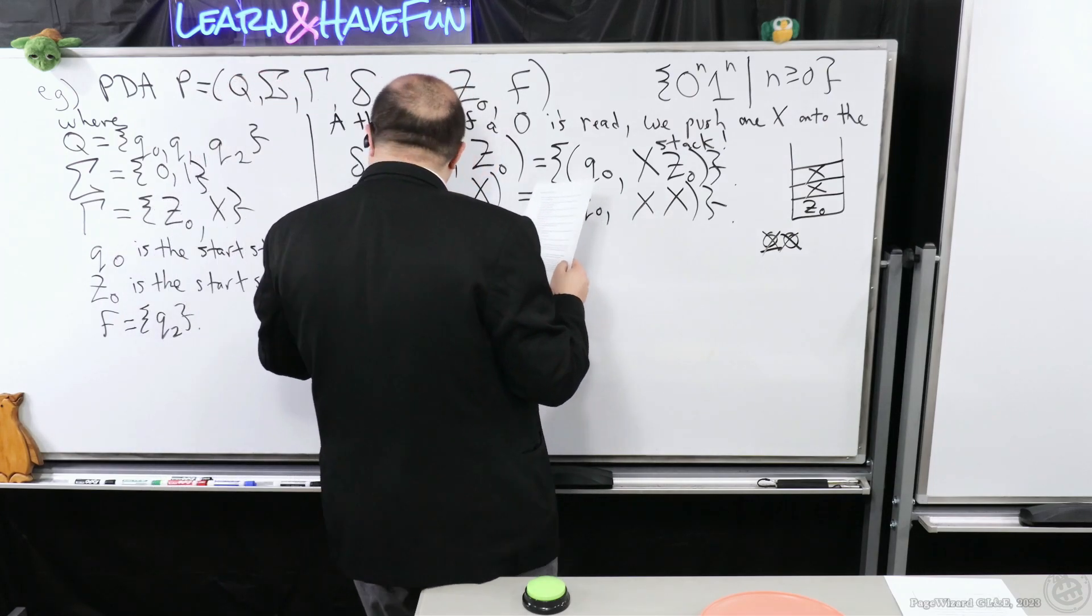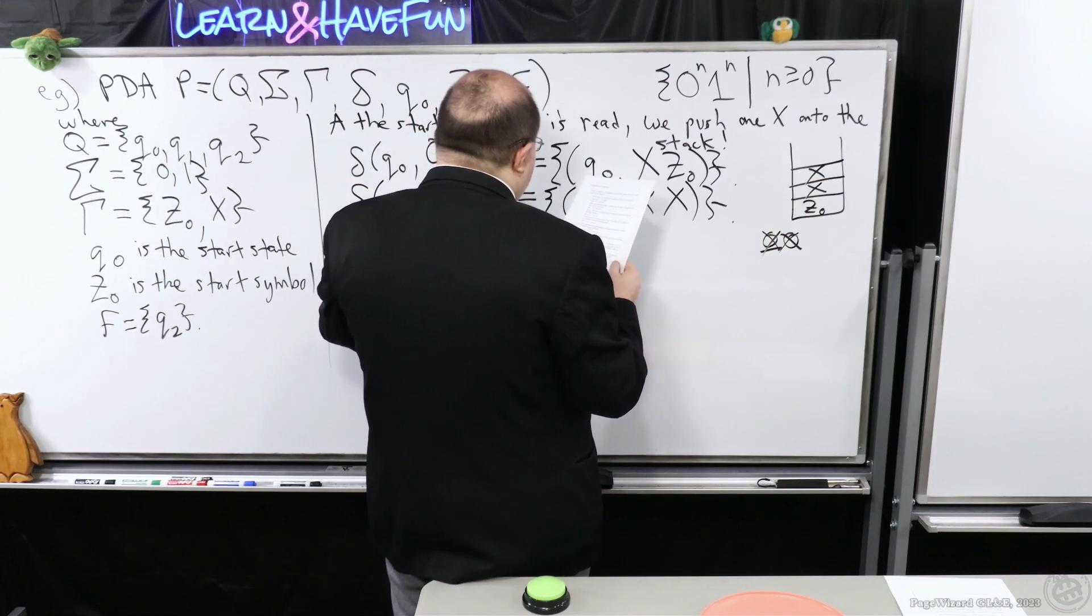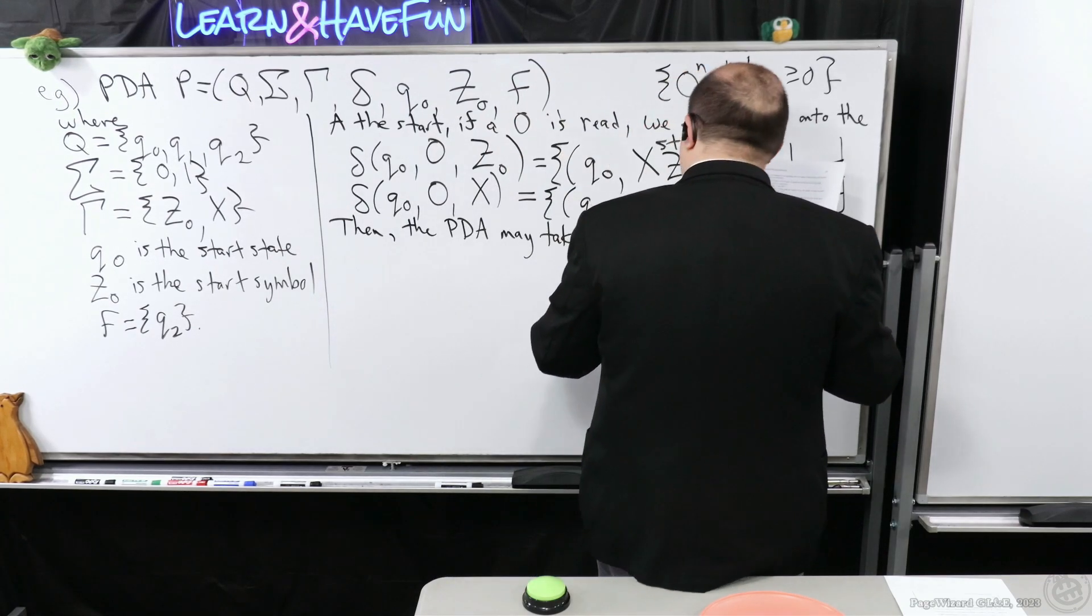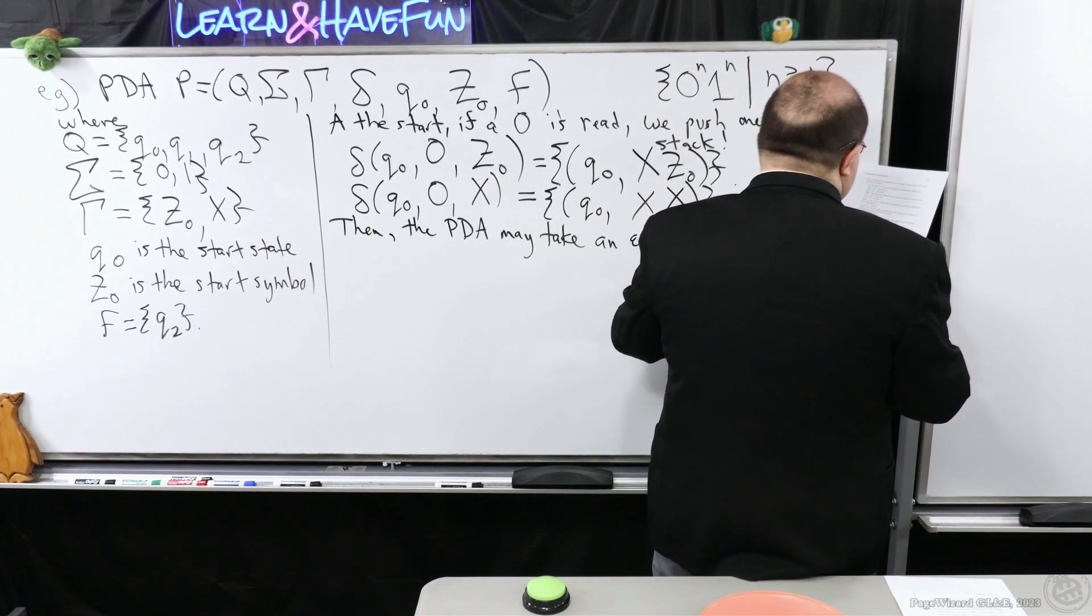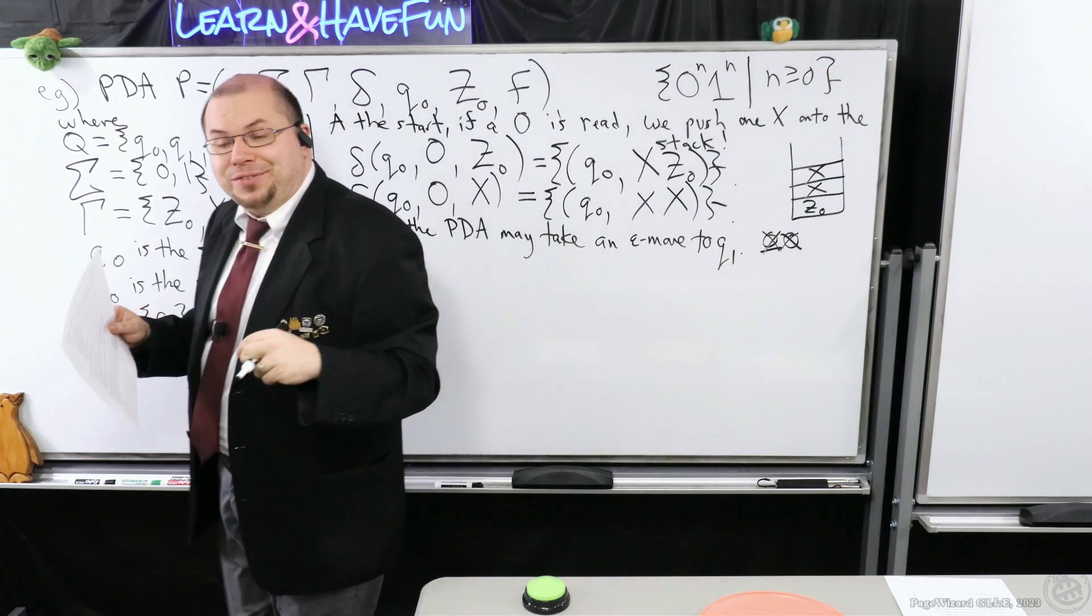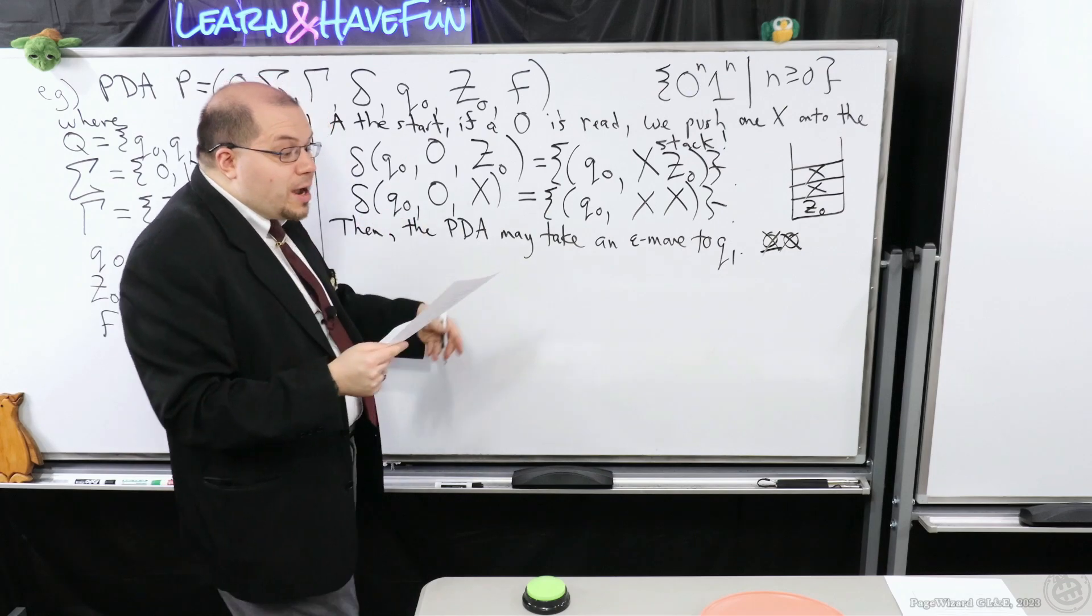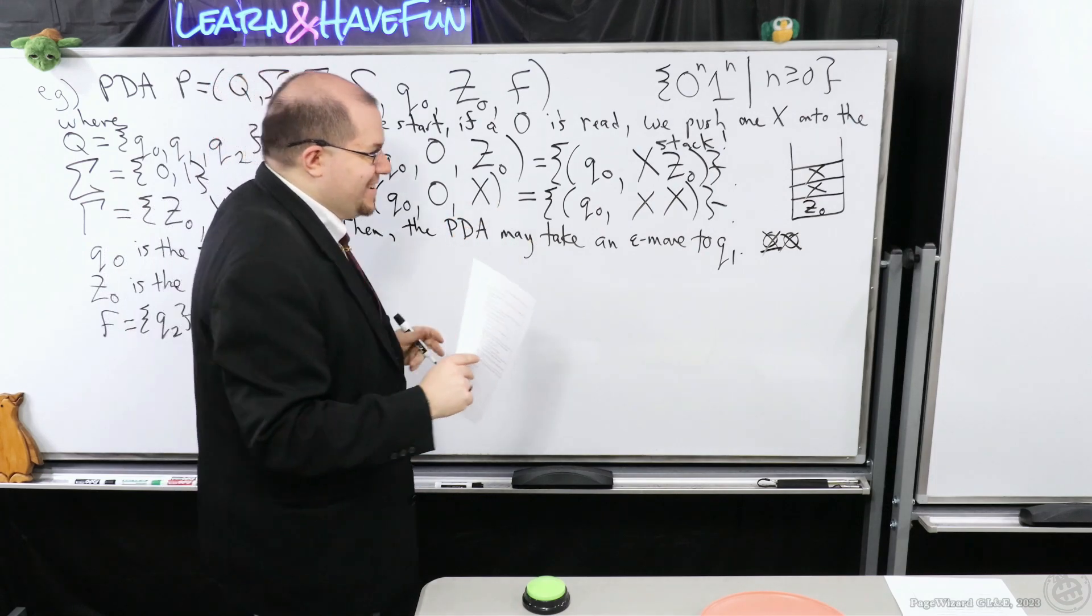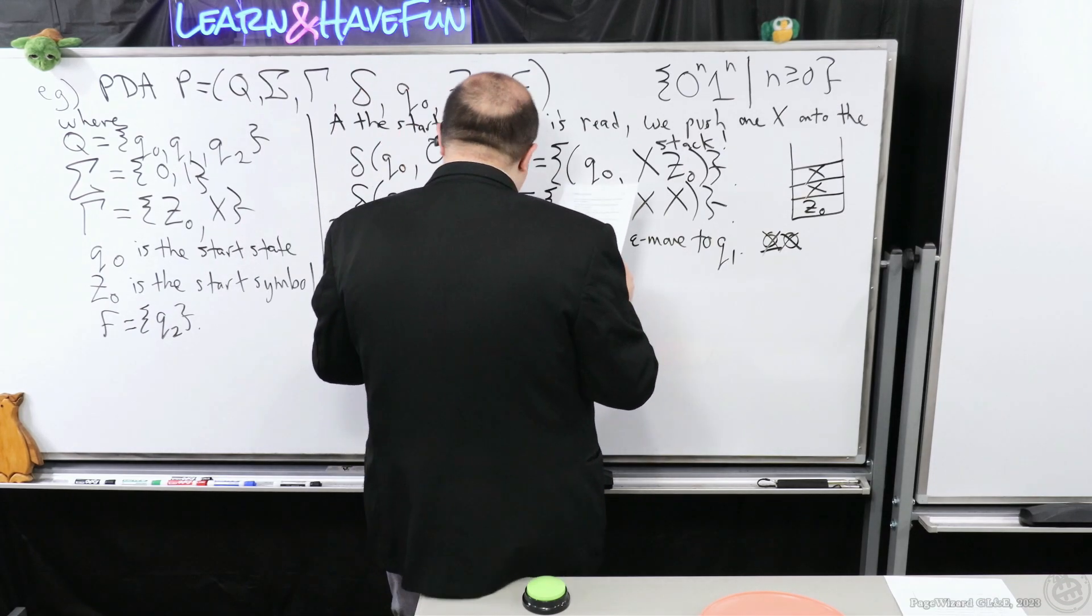So that's what's going to be this next part. Then the PDA may take an epsilon move to Q1. And when it's in Q1, that's when we can start reading the ones. Think of them as the different phases. So now I need to describe these epsilon moves. So now remember, on an epsilon move, you don't consume a symbol. So we have delta Q0.